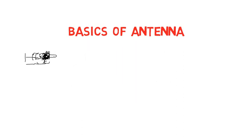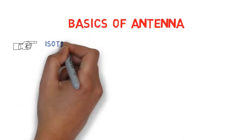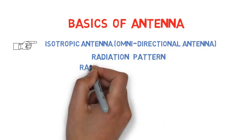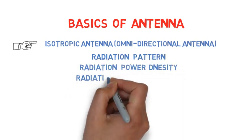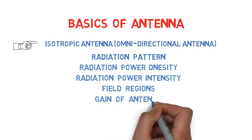We will start from the basic terms: isotropic antenna, radiation pattern, radiation power density, radiation power intensity, field regions, and gain of antenna.